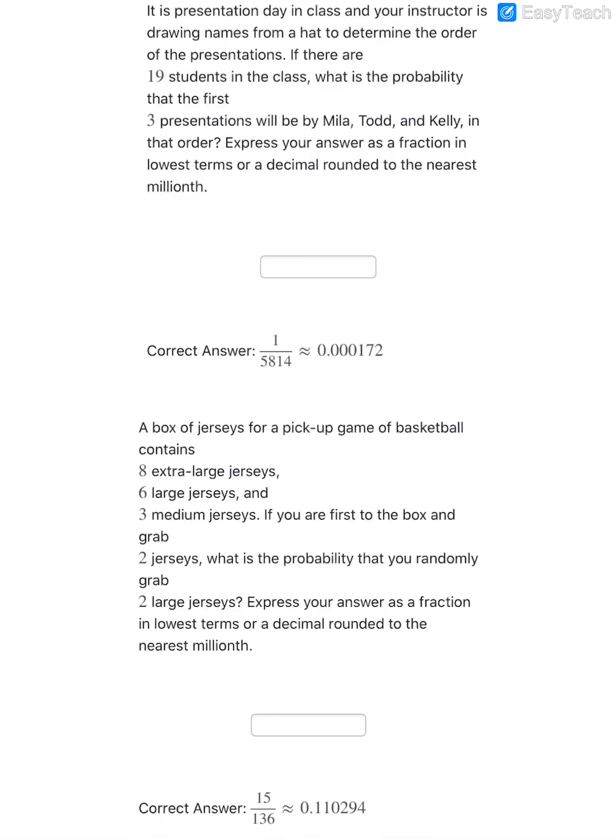So on this next problem it says it is presentation day in class, and your instructor is drawing names from a hat to determine the order of the presentations. If there are 19 students in the class, what is the probability that the first 3 presentations will be Myla, Todd, and Kelly in that particular order? Well, there's only going to be one way to choose Myla, Todd, and Kelly in that particular order.